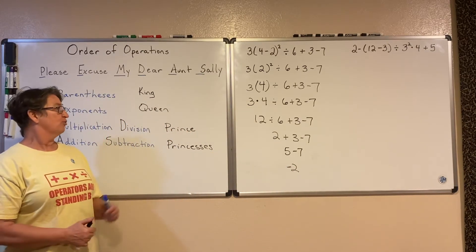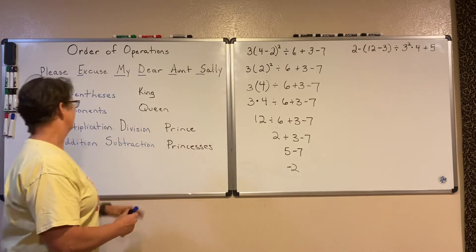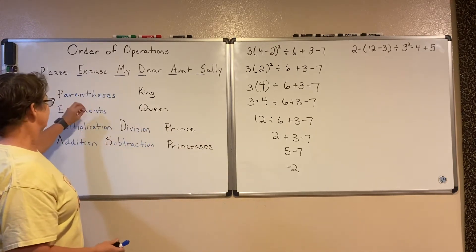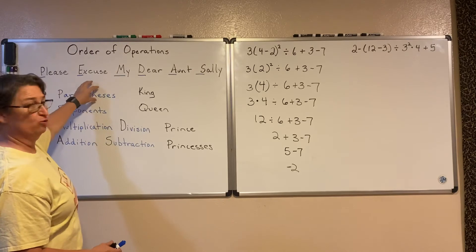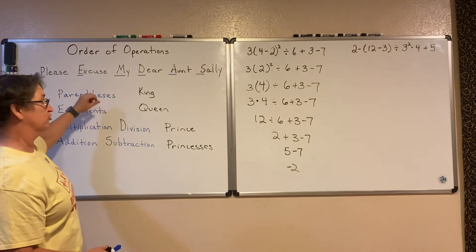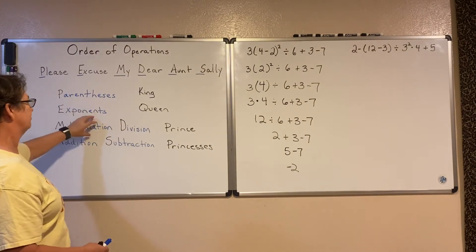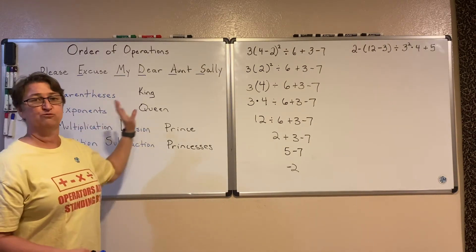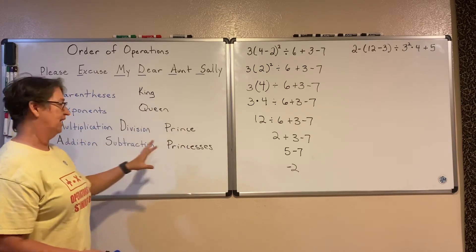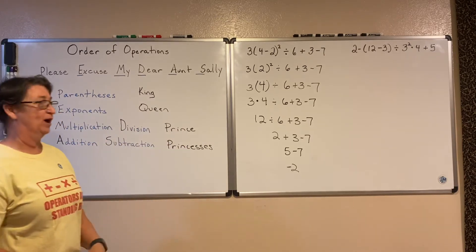As I perform those order of operations, I end up with negative 2. If we all do it in that same order, we will all end up with negative 2. So this is the order we'll always go in: parentheses and grouping symbols first, then exponents, then multiplication and division from left to right, then addition and subtraction from left to right.